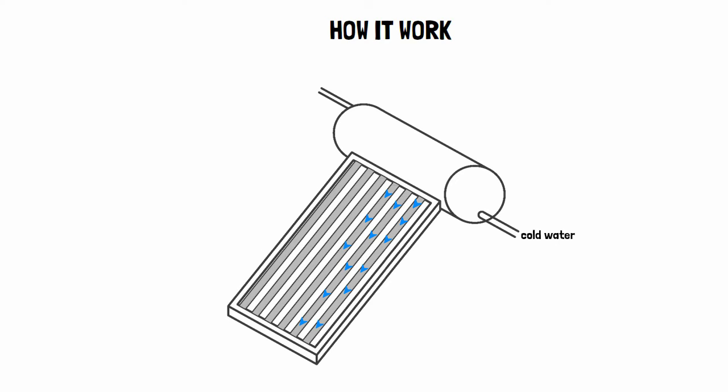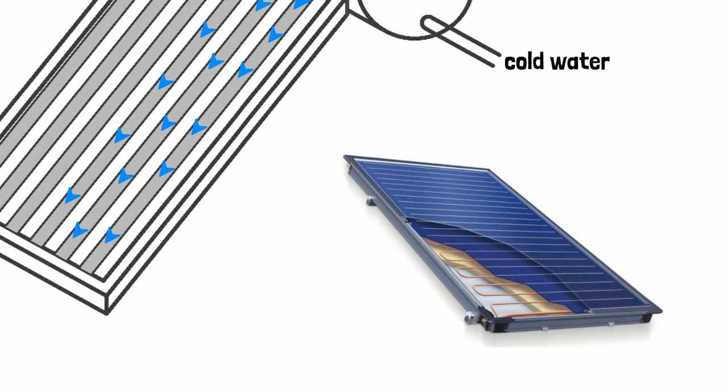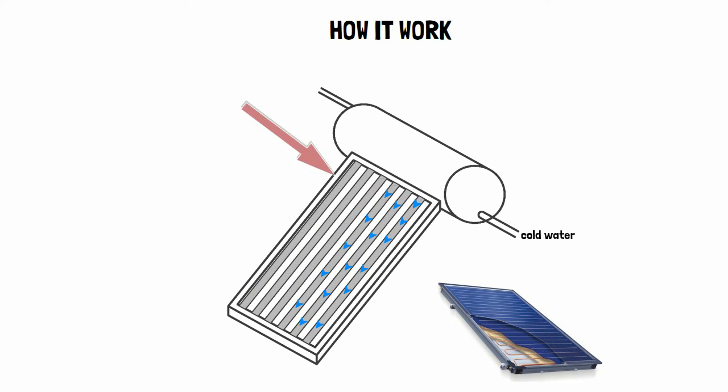The solar collector is an insulated weatherproof box painted with black to absorb more heat. It is covered with glass to trap heat inside. Water in the solar collector is heated by solar radiation.